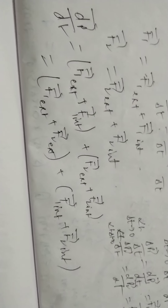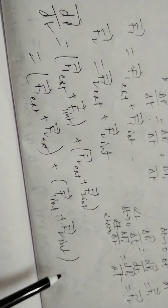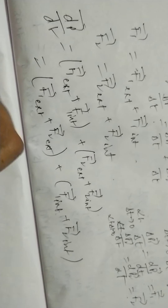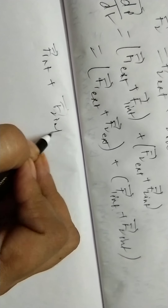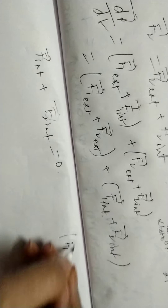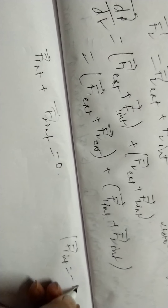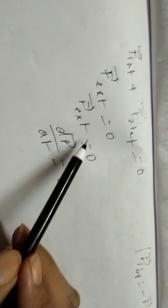The internal forces form an action and reaction pair. So f1 internal plus f2 internal equals zero, because f1 internal equals minus f2 internal — they are equal and opposite. Therefore, if the total external force is zero, we can write dp vector by dt equals zero.